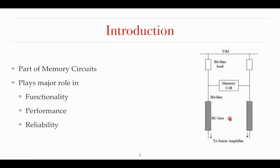During the read operation, we are taking a particular data from the memory, and during the write operation we are giving a particular data into the memory. Word line will be used to enable read as well as write operation. If word line is 1, that means we can write or read data from the memory. But if the word line is 0, the memory will be in the hold state. At the bottom side of the figure, these two bit lines are connected to a sense amplifier.